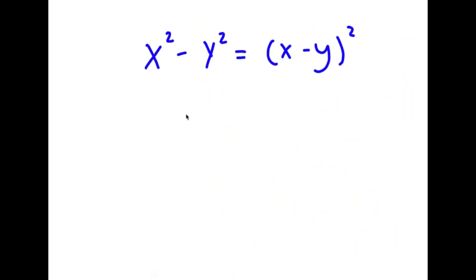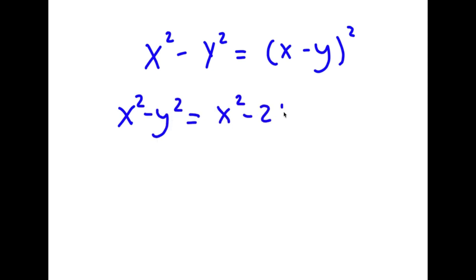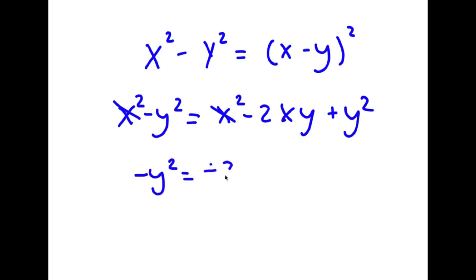In this problem, I have x squared minus y squared is equal to x minus y squared. To start, I'm going to expand x minus y squared. So now I have x squared minus y squared is equal to x squared minus 2xy plus y squared. These two x squared terms cancel out if I subtract x squared on both sides, leaving negative y squared is equal to negative 2xy plus y squared.